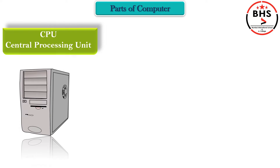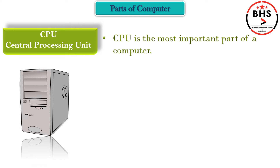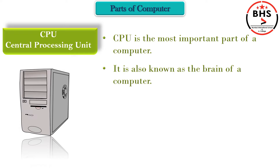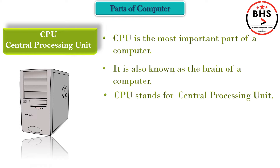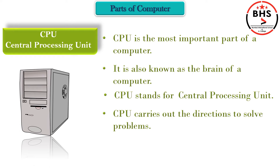CPU — Central Processing Unit. Children, CPU is the most important part of a computer. It is also known as the brain of a computer. Just as our brain helps us to do different types of work, the CPU also helps the computer to do different types of work. The full form of CPU is Central Processing Unit. CPU carries out the directions to solve problems and guides the computer in dealing with different types of problems.